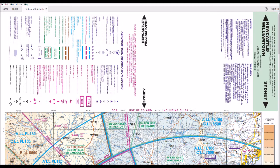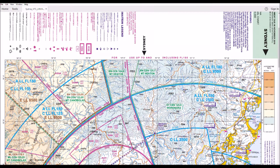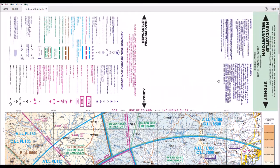What we've got open here is what's called a visual terminal chart. As you can see on the screen, it says Sydney, and it also has Newcastle and Williamtown. Now in real life, these PDFs would be printed out on paper, and right now we're looking at the Sydney side of that printed piece of paper.